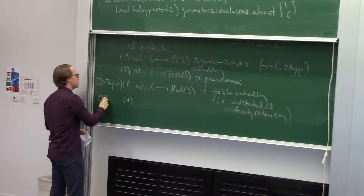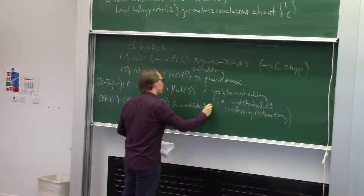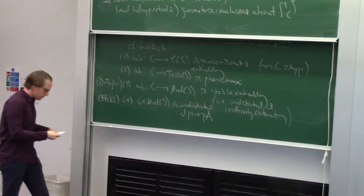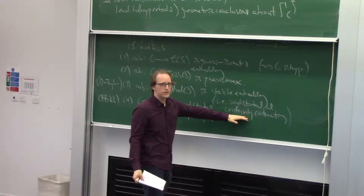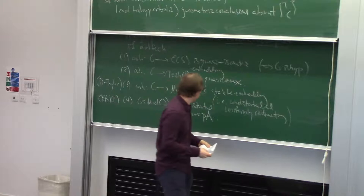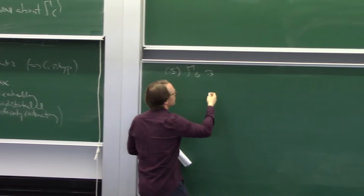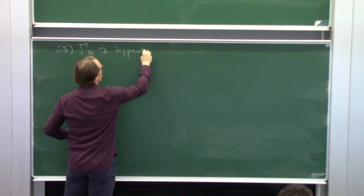From Autumn's talk, the theorem of Farb-Mosher and Hamenstädt-Leininger says that G is undistorted and purely pseudo-Anosov. Every pseudo-Anosov element has some contraction property, and what's enough is to know that every element has a contraction property. The last property here is that the surface group extension is hyperbolic.